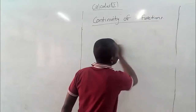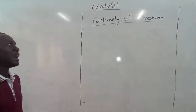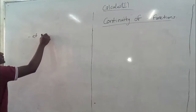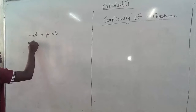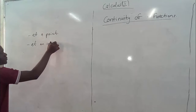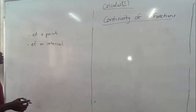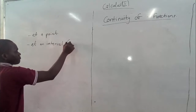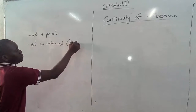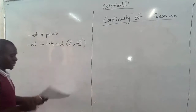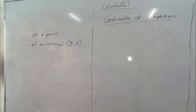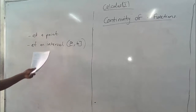With this idea of continuity of functions, we are going to introduce two types of continuity. We have continuity at a point and continuity at an interval. An interval means a range of numbers in the domain, from A to B, while a point is a particular number or value in the domain.